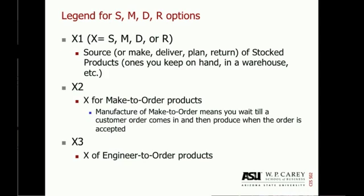Organizations perform these key processes in many different ways. Within the SCOR model, there's a convention where you put S, M, D, or R first, and then if you're identifying a specific subset process, you use 1, 2, 3, or other alternatives. For example, S1 means source of stocked products — the ones you're going to keep on hand in the warehouse. If you said M2, then you'd be making make-to-order products — ones where you wait for your customer to place an order and then respond by producing the products they've asked for.